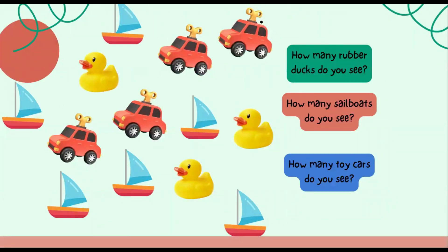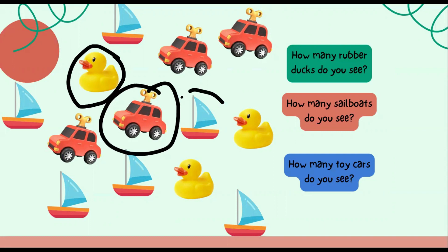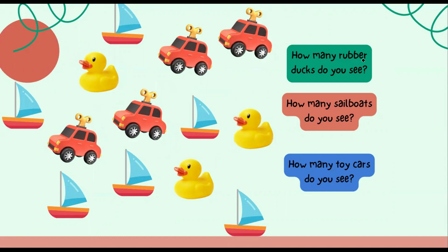Look at all of these objects that I have on my screen. I have rubber ducks, I have sailboats, and I also have toy cars. When we look at these objects we're going to count them in their category. So we have our rubber duck, our toy car, and our sailboat — three different objects in this group. I want to know how many rubber ducks do you see, how many sailboats do you see, and how many toy cars do you see.